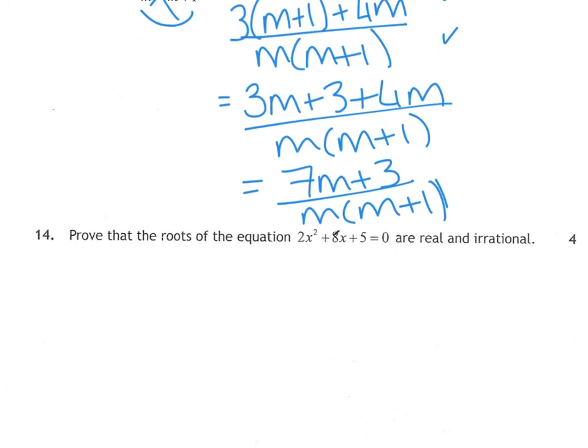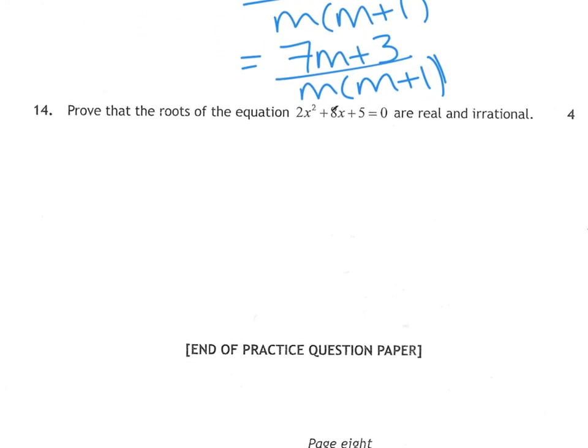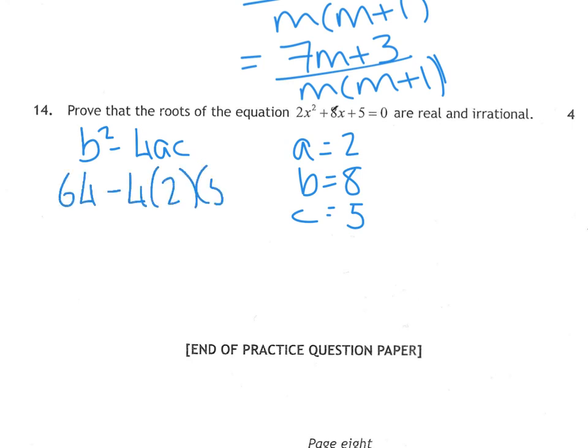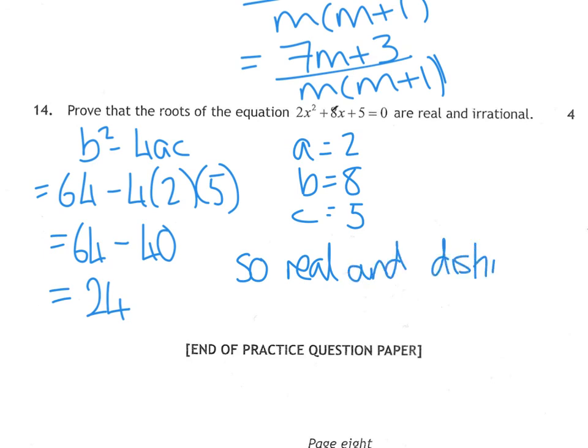Number 14. Prove that the roots of this equation are real and irrational. It's talking about nature of roots. So b squared minus 4ac. So a is 2, b is 8, and c is 5. So b squared is 8 squared, which is 64, take away 4 times 2 times 5. Which is 64 take away, 2 fives are 10 times 4 is 40. 64 take away 40 is 24. So we have 2 real and distinct roots, first of all. And the reason we know that is because b squared minus 4ac is greater than 0. So we've got 2 real and distinct roots. That's your bog standard, your normal question. This bit about irrational.